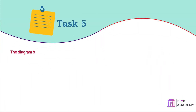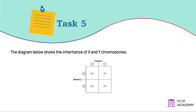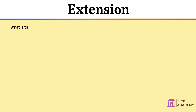Task: The diagram below shows the inheritance of X and Y chromosomes. Draw a tick on the part of the diagram that shows a sperm cell. The X or Y from parent one both show sperm cells. Extension: What is the probability of having a female child? The probability of having a female child is 2 out of 4, or 50%.